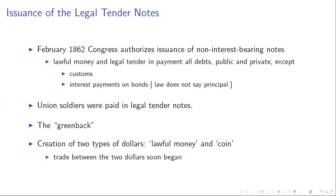This creates two types of dollars. You have lawful money — money by law, the greenback — and then you have coin, which is gold and silver. Both are called dollars, but they're very different types. When you say you're owed a dollar, you now need to specify whether it's a dollar in lawful money or a dollar in coin. Trade between these two dollars is going to begin.